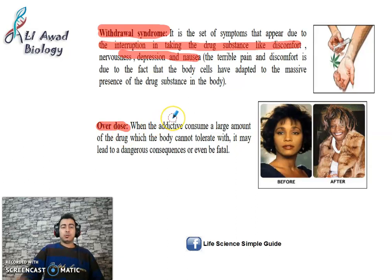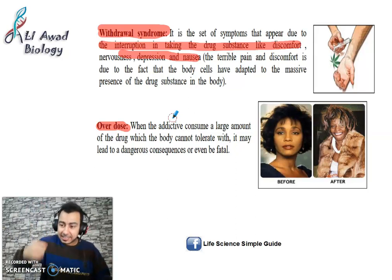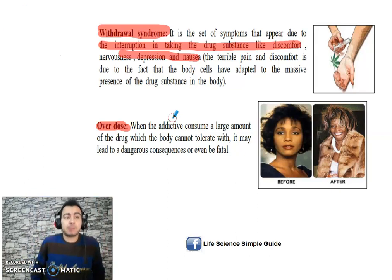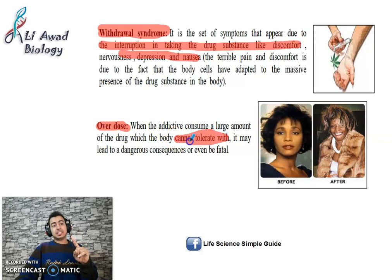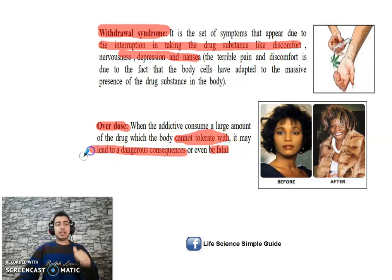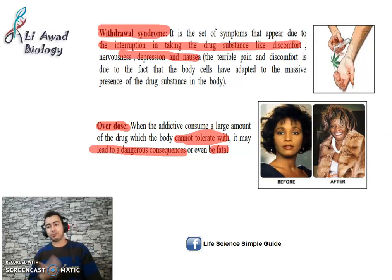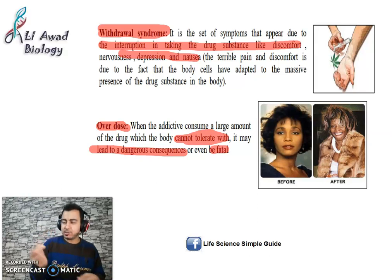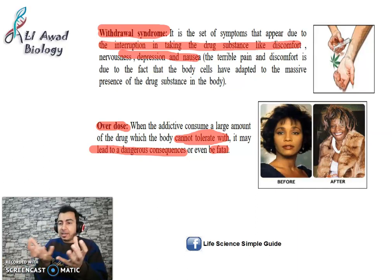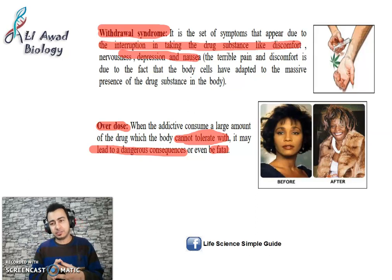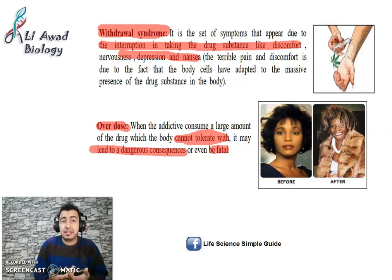Overdose (الجرعة الزائدة): when you consume a dose that your body cells cannot tolerate. When you take an increasingly large quantity of any substance that makes you keep taking it until you reach the stage of taking it in a very large amount — this is considered a drug. The problem is your body cannot tolerate it; it can lead to death — it's fatal — or kidney failure, breathing difficulties, or liver damage. The addict keeps increasing: half a gram, one gram, one and a half, two, three grams, and they no longer feel anything. So the addict takes six or seven grams all at once. This is called overdose, and most of the time it is fatal.